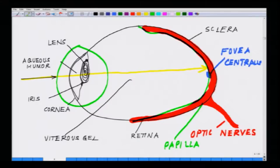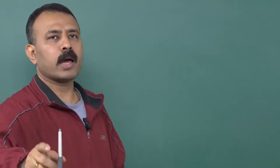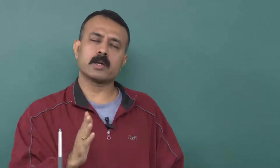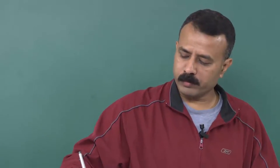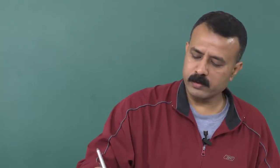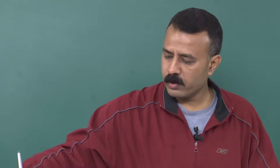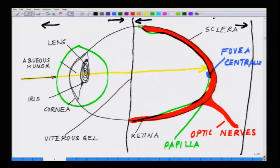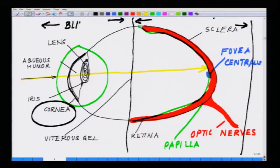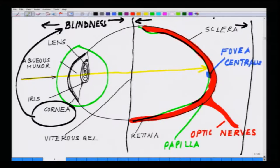Now we will talk about the different kinds of blindness. Blindness can be described at two levels. Level one is any blindness happening on the front side — where light passes through the lens and cornea. For example, damage to the cornea can lead to blindness, and so can damage to the lens.